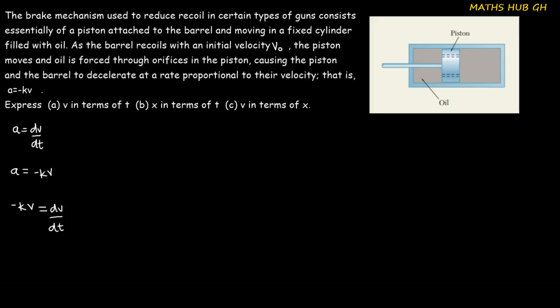We want to express v in terms of t, so the best way to do this is to integrate the expression. We have dv over v equals minus k dt. We are going to integrate this. But this is an indefinite integral, so before we can compute this, we would like to change it to a definite integral by setting some initial and final conditions.